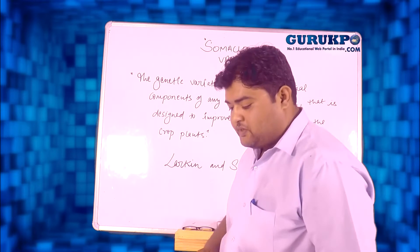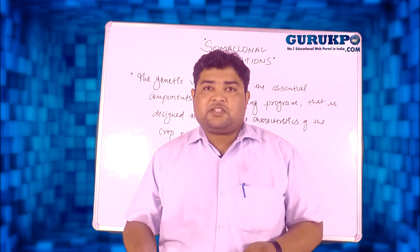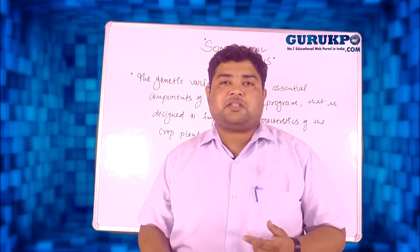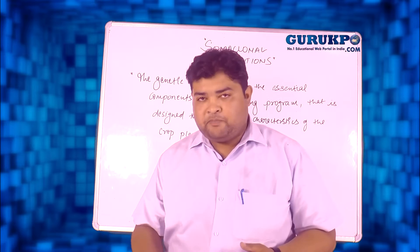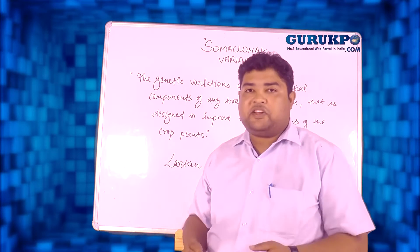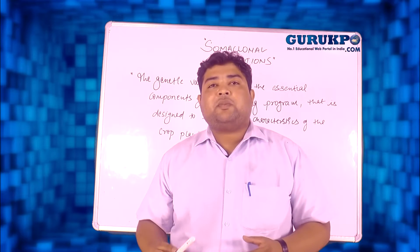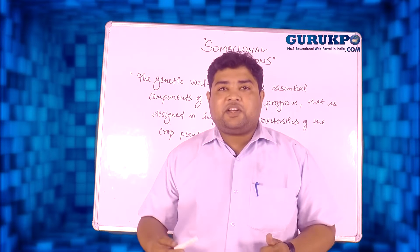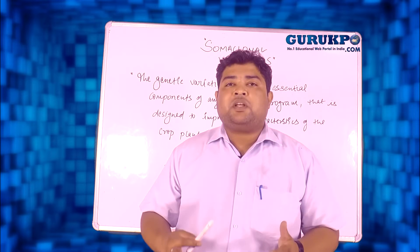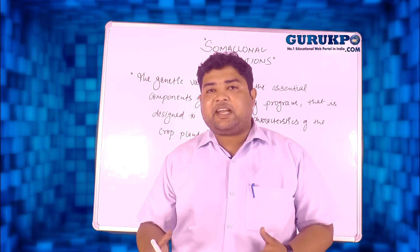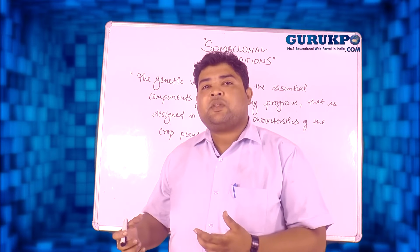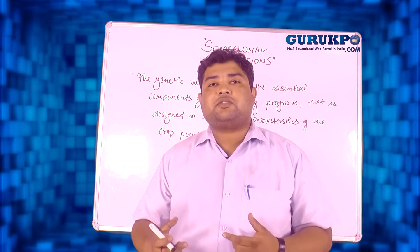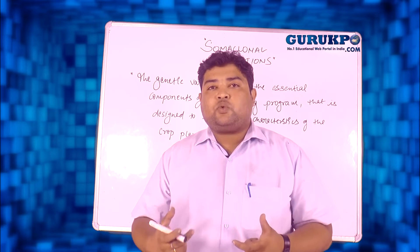In our last topic we discussed about what plant tissue culture technique is and how it is useful for mankind. In this series we are now going to describe the effects of plant tissue culture techniques that we can utilize for the benefit of mankind. Somaclonal variations — as the name defines, soma means somatic cells and clones means the generation. When somatic cells of plants are treated with mutagens, chemicals, or other agents, variations can be achieved at the genetic level and these genetic variations can be transferred to the inheritance clones of the plant. When this situation arises, the whole process is called somaclonal variations.